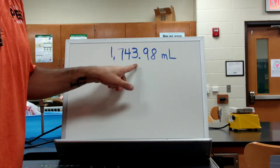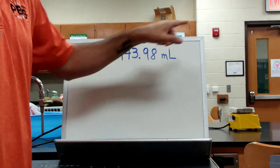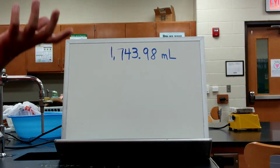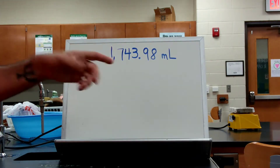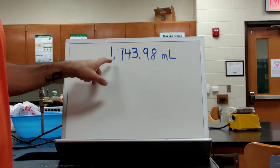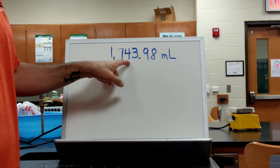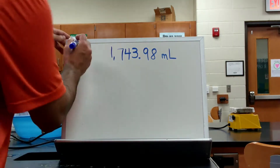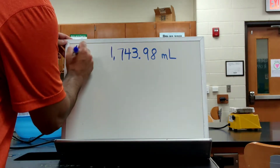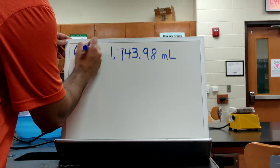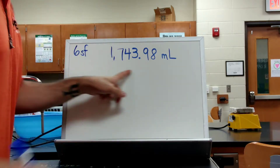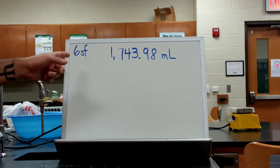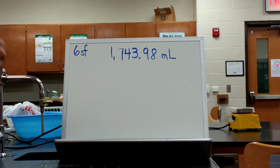So let's say I had this large number: 1,743.98 milliliters. If I'm looking at this right now, this number has one, two, three, four, five, six sig figs. Just as a quick review, these are all non-zeros, so I have six sig figs in this number.